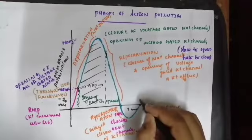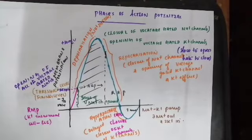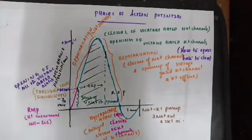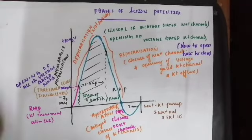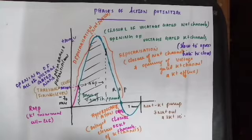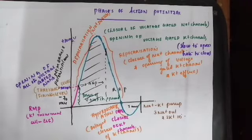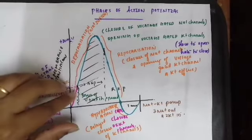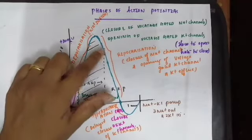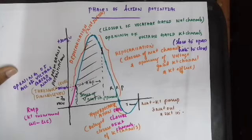From one-third of repolarization to the end of hyperpolarization is the relative refractory period. During this period, if you apply a stimulus of sufficient intensity it may produce a response. A stimulus can produce a response during relative refractory period if it is of sufficient strength, but a stimulus of any intensity will not produce a response if the neuron is in the absolute refractory period — which spans from the beginning of depolarization to one-third of repolarization.